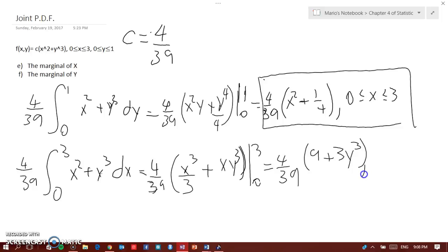And again, you have to put the limit: 0 less than or equal to y less than or equal to 1. This is the marginal of Y. So guys, this is the easiest thing you are going to get when it comes to the joint PDF, so far.